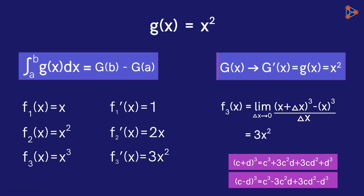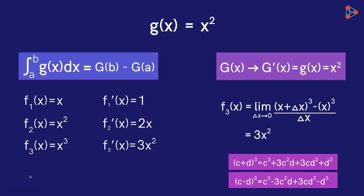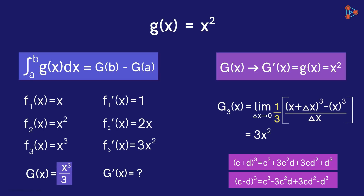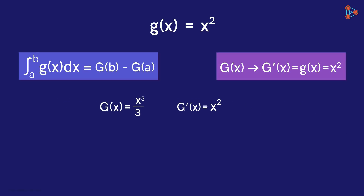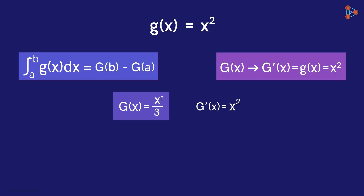But we want the derivative of this function to be only x squared. So what if we consider the function capital G of x equal to x cubed over 3? For this function, the average rate will get multiplied by 1 over 3. So we will get the derivative to be equal to x squared. So we get the function capital G of x to be equal to x cubed over 3.